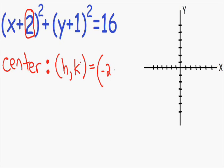The k-coordinate, or y-coordinate of the center, is always next to the y-term. Since it is a 1 and it's positive, it's going to be the opposite sign, so it's negative 1. I'm going to plot that on the graph — going left 2 units and down 1 unit. So here we have the point negative 2, negative 1, and this is the center of our circle.